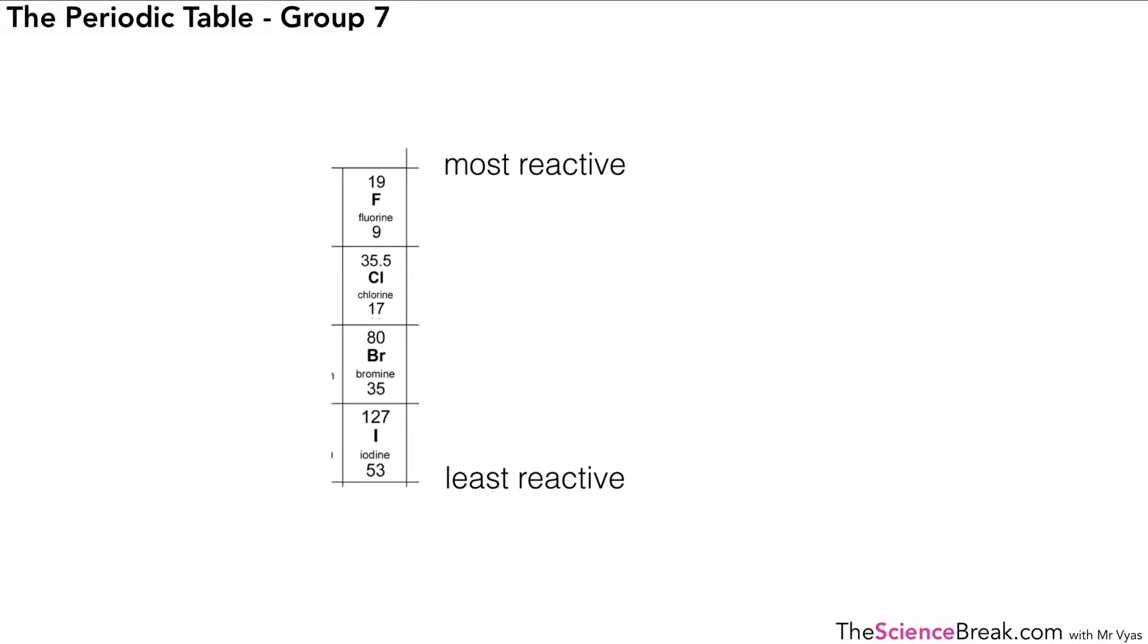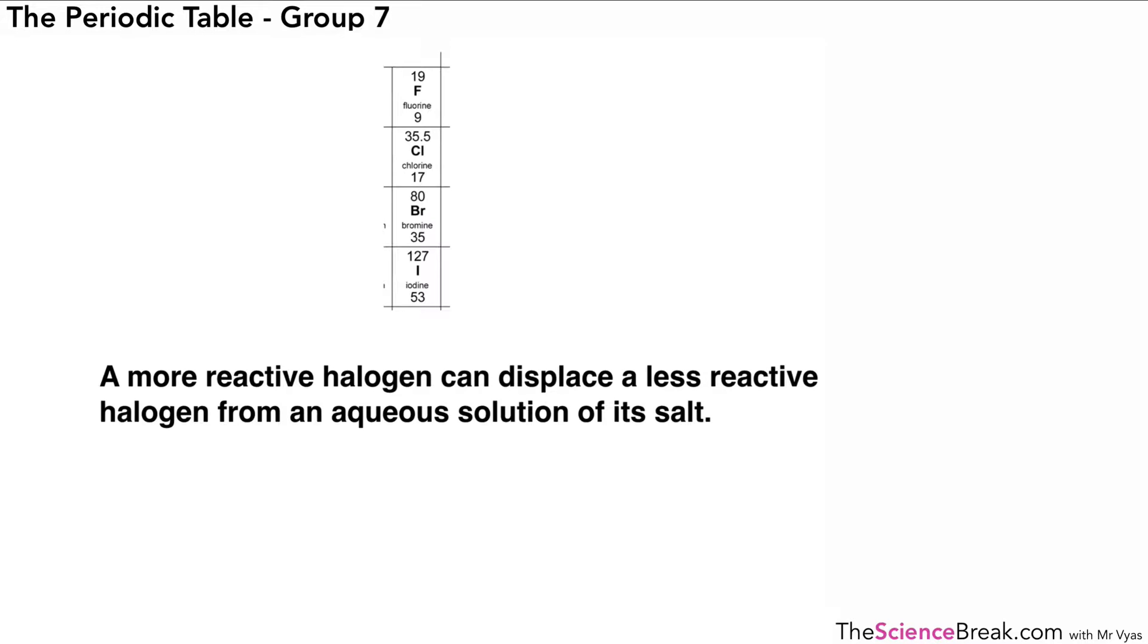Now we can use that information to understand a sentence that I'm just about to put on the screen. It says a more reactive halogen can displace a less reactive halogen from an aqueous solution of its salt. Now what does that mean? Well, firstly, the word displace, that word in this case means to change places with. And the next word that you might not be familiar with is aqueous. That means something that's dissolved in water.